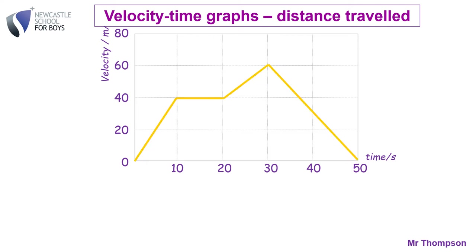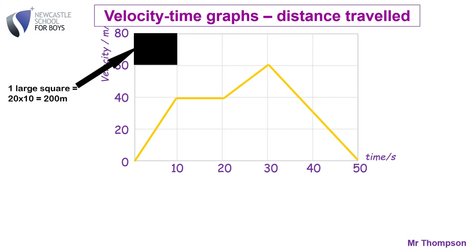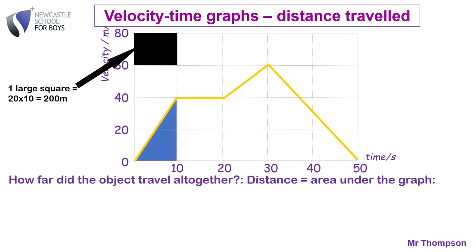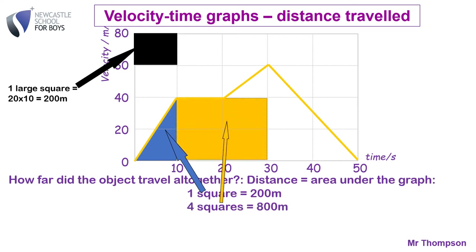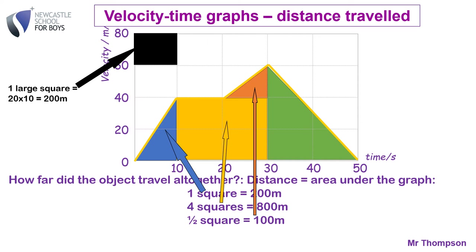The alternative way of doing the same question is to pick one square and work out its area. The area of that square is 20 by 10 = 200 metres. Then simply count the squares. The first section is one full square = 200. The next is four full squares = 800. The next is exactly half a square = 100. The last section counts as three full squares = 600. Add those together and you get the same answer: 1700 metres.